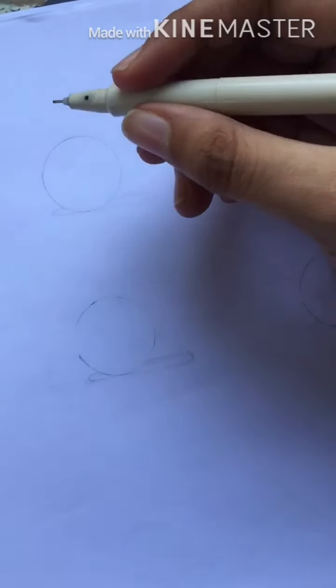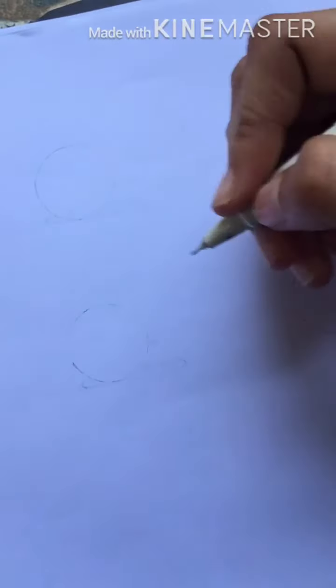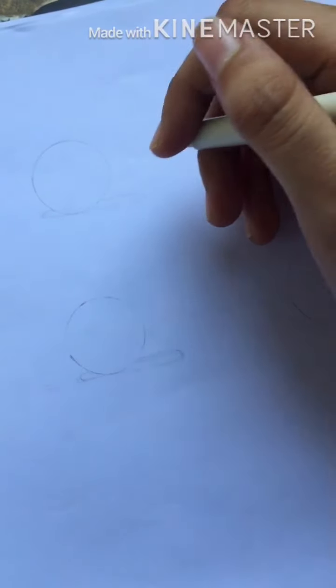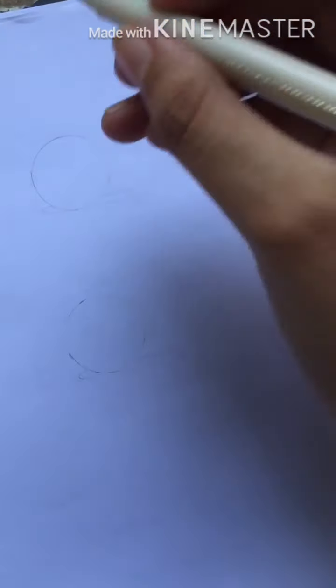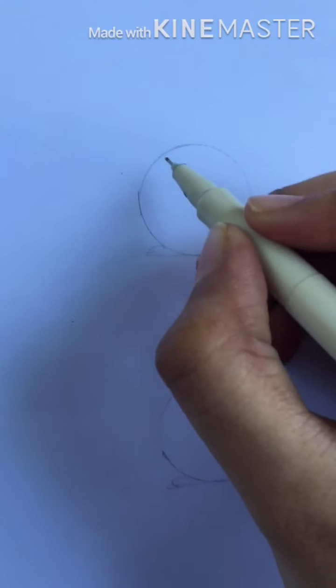For each one of these techniques, we are going to draw a sphere because a sphere is a rounded 3D form. It will allow you to create gradations of slow changes in value from dark to light. So let's start.